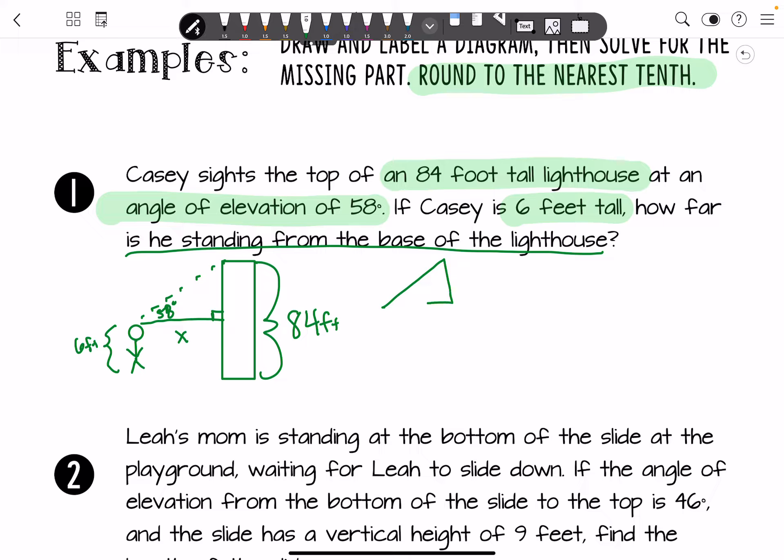So if you need to redraw your triangle, you'll see that this is x, this is 58 degrees. And this leg right here is going to be 84 minus six, so the entire length of the lighthouse minus the height of Casey. So 84 minus six gets you 78. Notice that for the angle we are working with, we are working with the opposite and the adjacent.